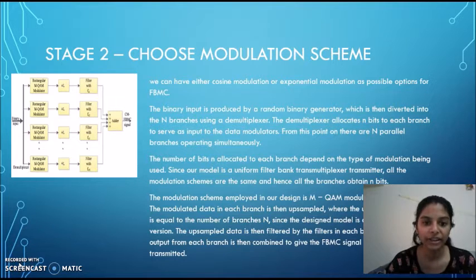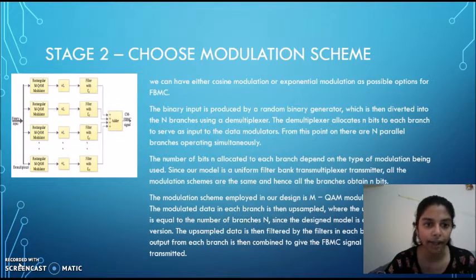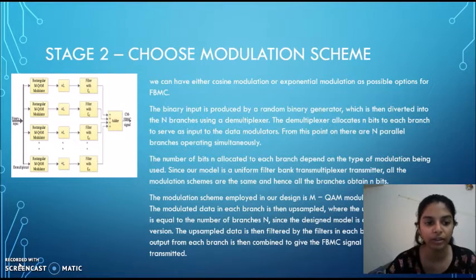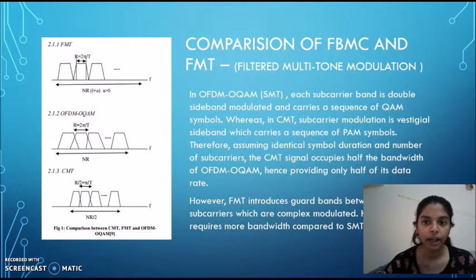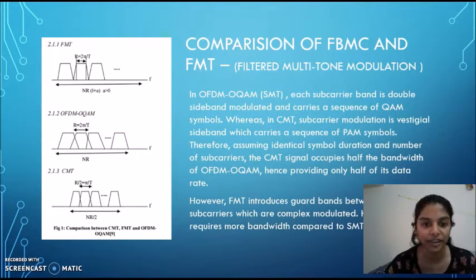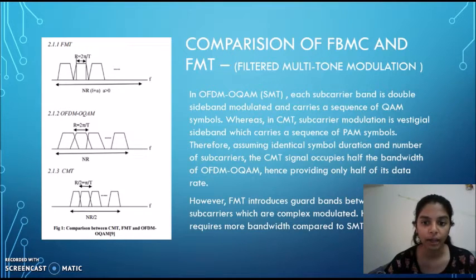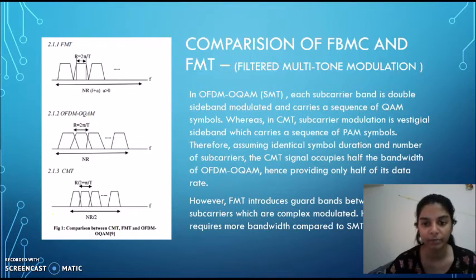Here we see a modulation scheme where MCAM modulation is being used, with M equal to 2^N. The number of branches N equals the upsampling factor L. The filtered data is then added by an adder, giving us the signal which will be transmitted. SMT and CMT are two FBMC types. CMT occupies half the bandwidth and hence provides only half the data rate. FMT, filtered multi-tone modulation, introduces guard bands between adjacent subcarriers and is more complex than FBMC.